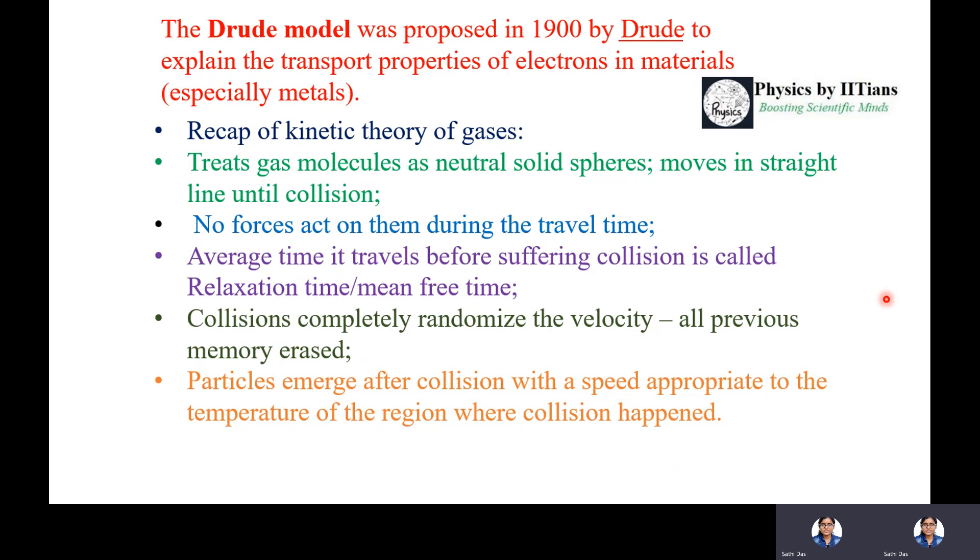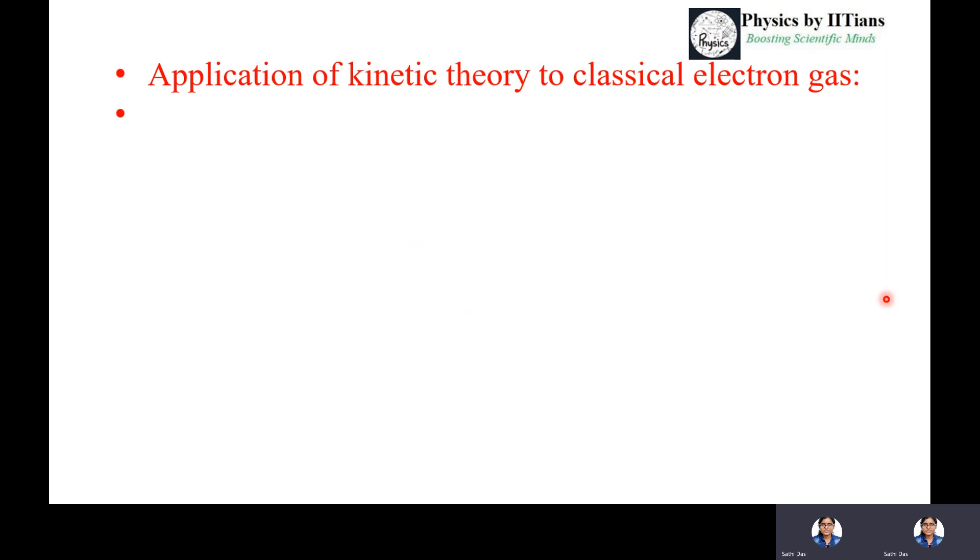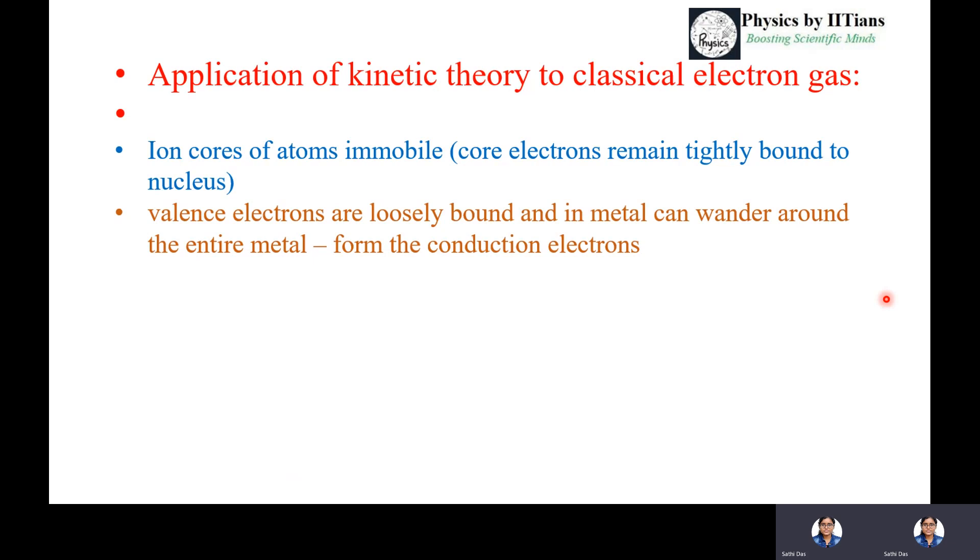Particles emerge after collision with speed appropriate to the temperature of the region where the collision happened. Now applying this kinetic theory to classical electron gas in metals: the ion cores of atoms are immobile and core electrons remain tightly bound to the nucleus, but valence electrons are loosely bound and can wander around the entire metal, forming conduction electrons.